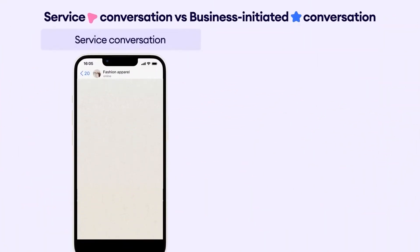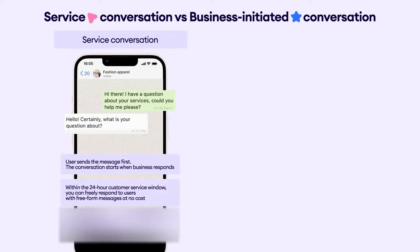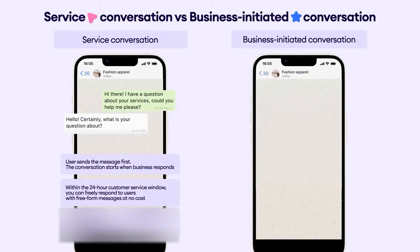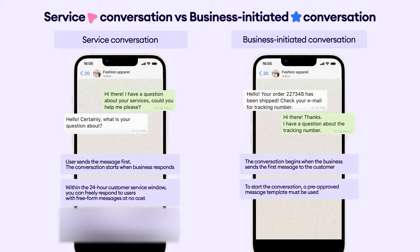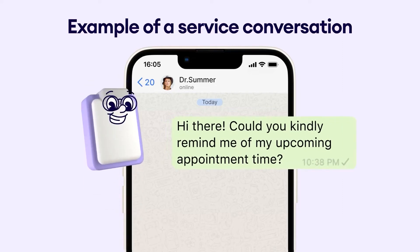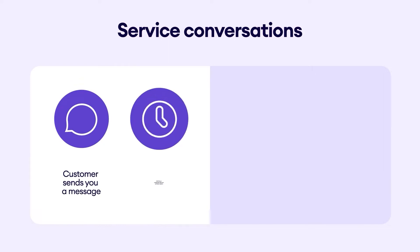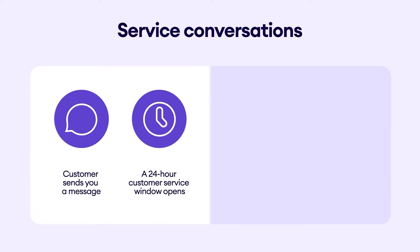There are two kinds of conversations on WhatsApp: user-initiated, now called service conversations, and business-initiated. WhatsApp defines service conversations as any user-initiated conversation, such as to resolve a customer inquiry. A service conversation starts when you respond to a customer who messaged you first. For example, if a customer asks about their appointment time and you reply within 24 hours with a free-form message, it's considered a service conversation.